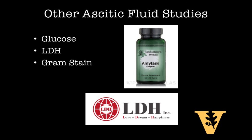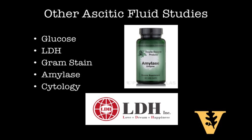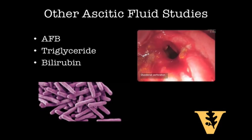Normally, your ascitic to serum amylase ratio is 0.4, but it can be higher than 6.0 in cases of pancreatitis. And cytology is, of course, something that should be considered when GI or GU malignancy is on your differential.